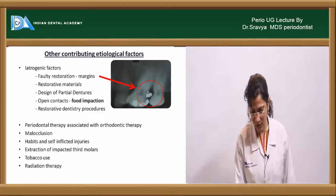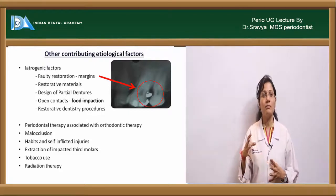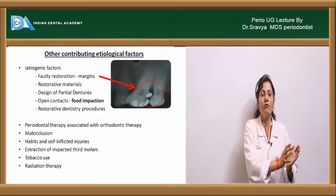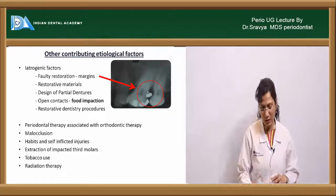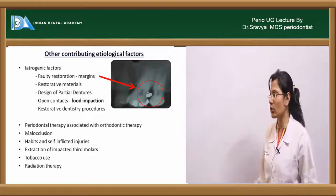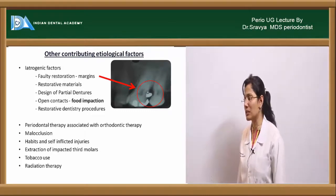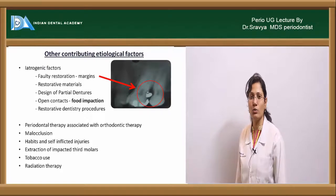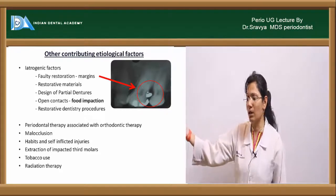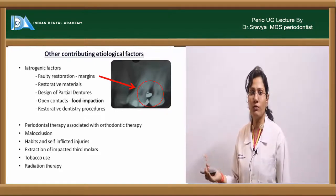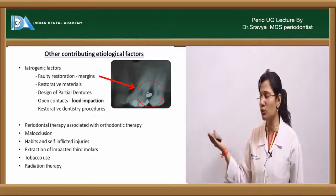Local contributing factors to periodontal disease include iatrogenic factors (dentist-induced), orthodontic therapy, malocclusion, habits, extraction of impacted third molars, tobacco use, and radiation therapy. Iatrogenic factors include faulty restorative margins such as overhanging margins, which act as a nidus for plaque accumulation, causing soft tissue irritation, alveolar bone loss, and periodontal progression.